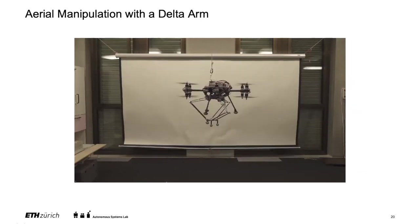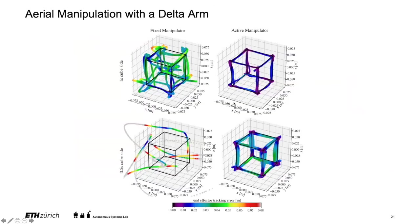Looking at the numerical results, tracking is improved significantly. On the left we have the fixed manipulator tracking one side of a cube trajectory within one second at the top and 0.5 seconds at the bottom — the bottom being faster. When the delta arm manipulator is active, the edges of the cube trajectory are tracked quite precisely, whereas using only the main body for position changes makes it difficult to accurately track the edges, especially for more dynamic movements. This is what we're working on to enable more efficient and accurate pose tracking of an end effector.